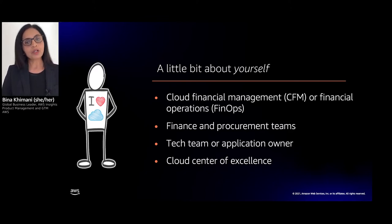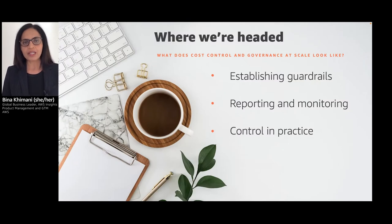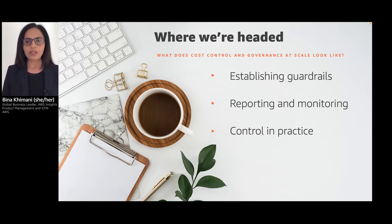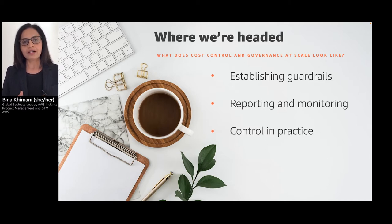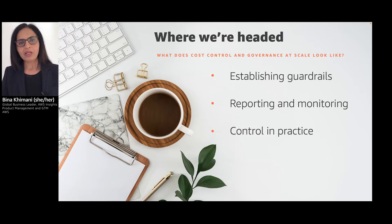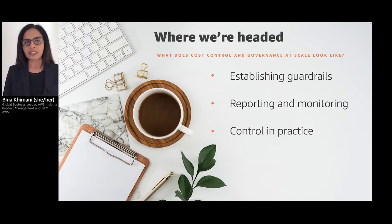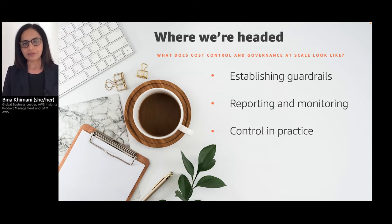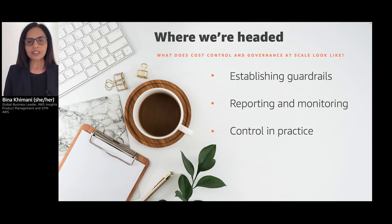We have a lot of good content to cover today and we will dive into three specific areas. First, how do we establish the basic guardrails to ensure that we are not slowing down the builders, but also making sure that our costs are in line with our broader financial and business goals. Second, how do we avoid billing surprises? The speed of innovation and agility are critical to business, and no CFO is comfortable with billing surprises. And finally, we will learn from Caitlin about how Morningstar is implementing governance and control measures within their organization.